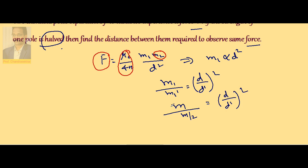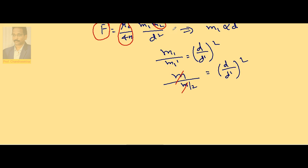So here M gets cancelled. Therefore, we can write this as D by D dash whole square equals 2, implies D by D dash equals root 2, or D dash equals D by root 2.